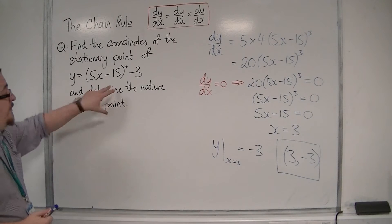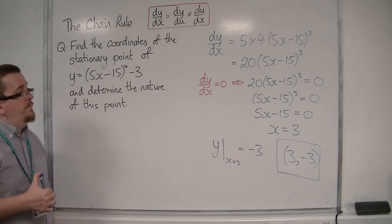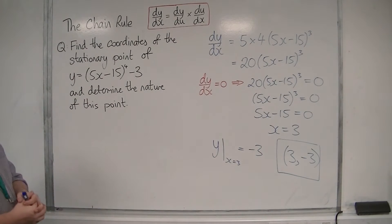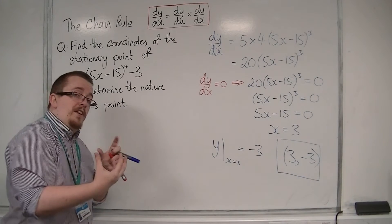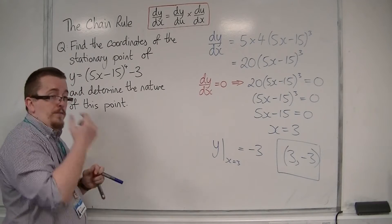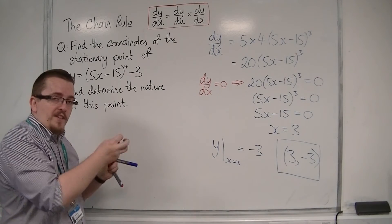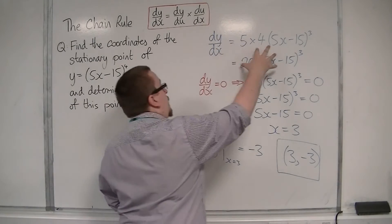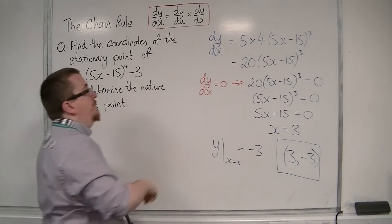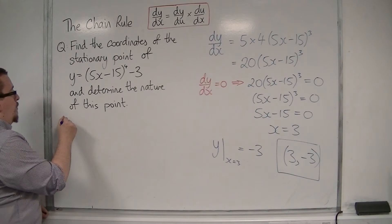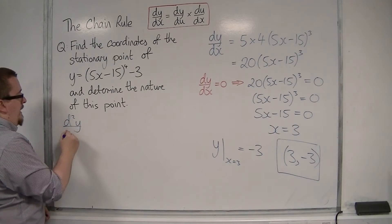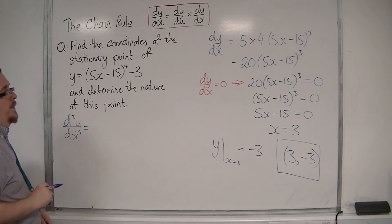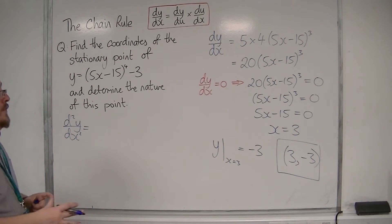We're also asked to determine the nature of this point. We can either look at the gradient either side of the stationary point, or we can work out the second derivative, d²y/dx², and substitute in the stationary point. I'm going to find the second derivative first.